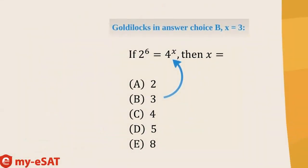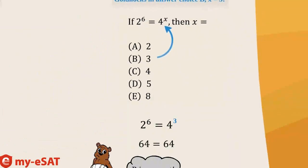Moving on, let's Goldilocks answer choice B, x equals 3. We get 64. Therefore, B is correct.